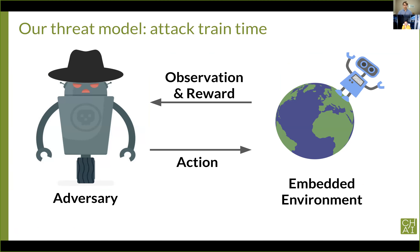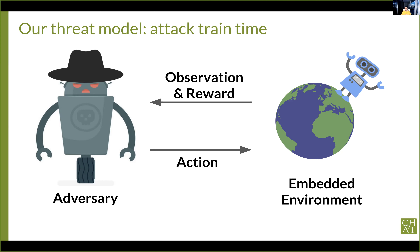A question about the framework: the adversary is also an RL policy, but what's its action space — what does it change? The idea is that both the adversary and the victim are embodied agents in this world, and we're considering a fairly symmetric case where they have the same body, though in general they don't have to be. The adversary is just moving its body, and this causes the victim to see something different. If you walk in front of someone, they're going to see a different set of pixels. You can't conjure a wall out of thin air or add white noise patterns to the victim's observations — you can only do things that are physical.